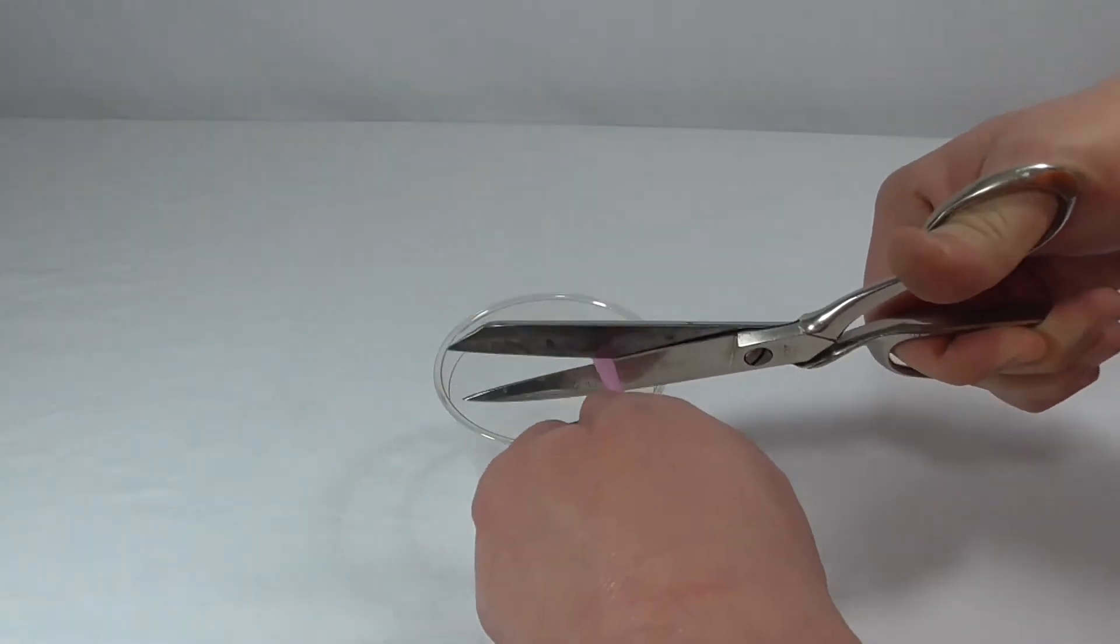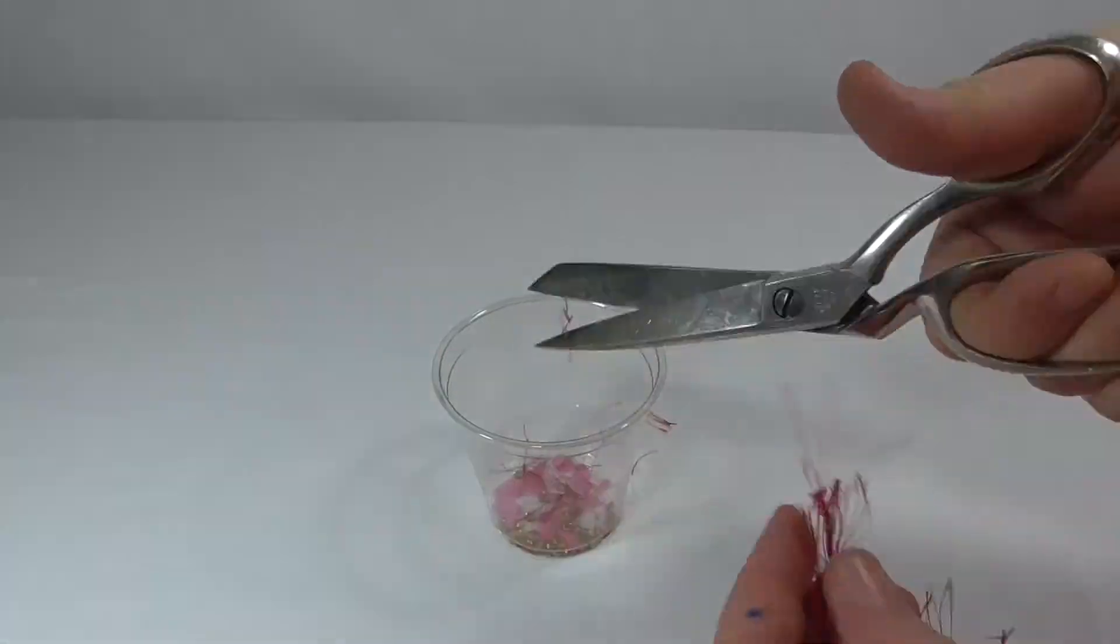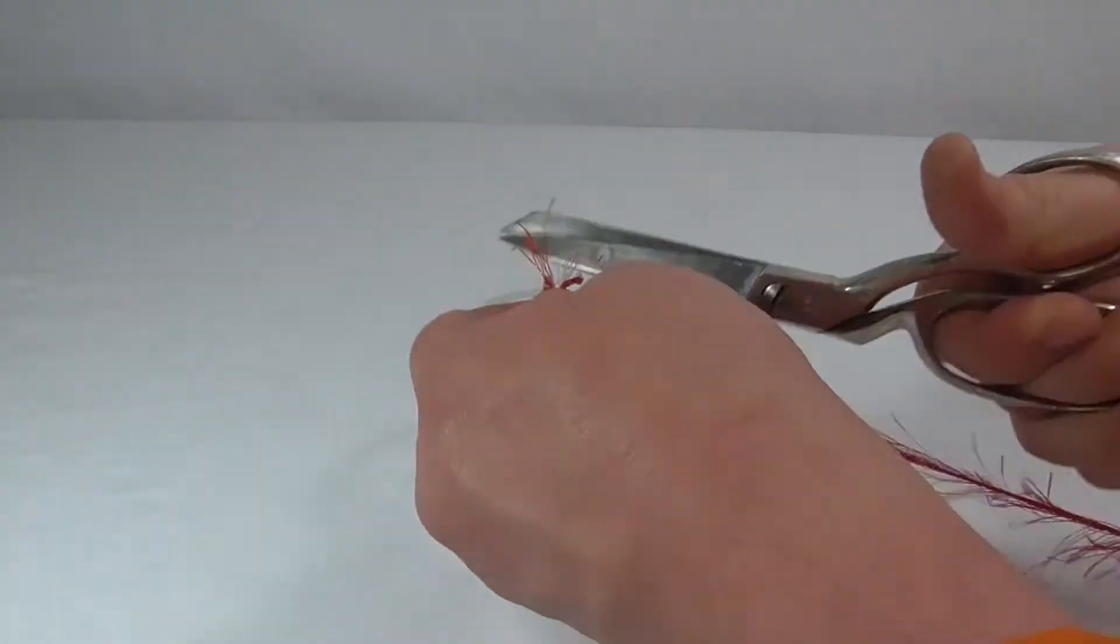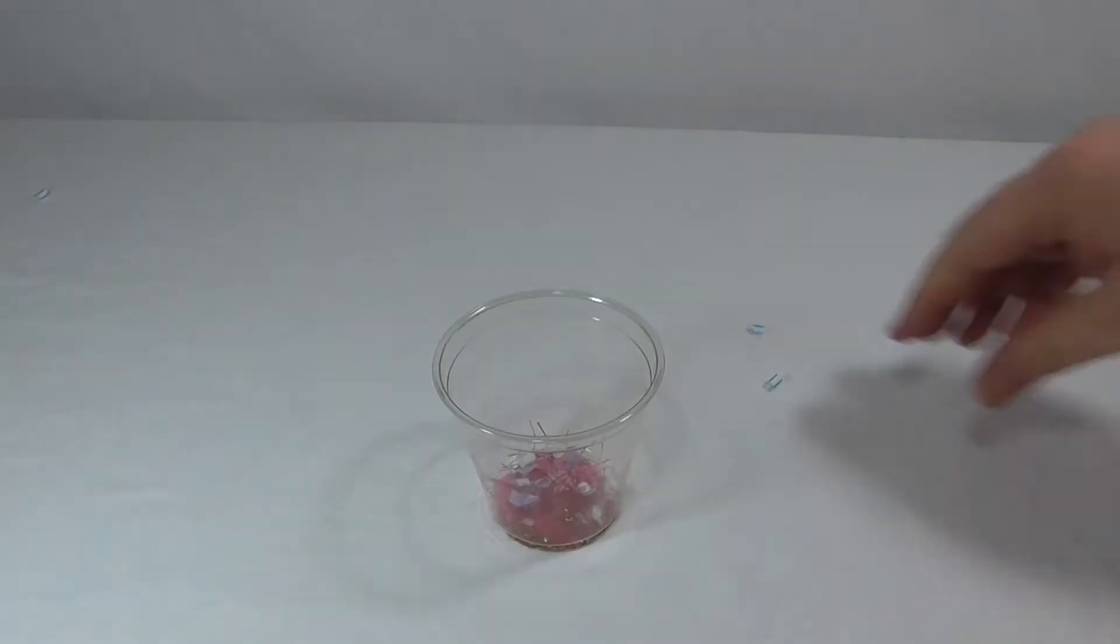You'll want to fill your kaleidoscope with anything colorful. It can be glitter, sequins, beads, or cut up straws, cut up string, whatever you have around the house that's colorful and preferably semi-transparent.